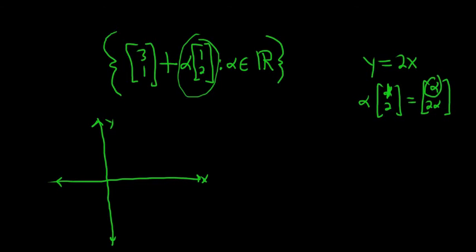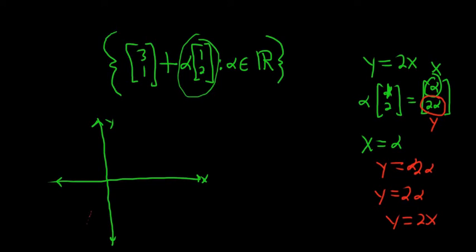If you think of this as your x component, your x equals alpha. And if you think of this as your y component, your y equals 2 alpha. So y is 2 alpha, but alpha is x, so y equals 2x. So you end up getting this line here, the line y equals 2x.